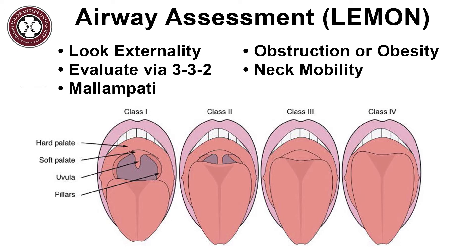The next two considerations are obstruction and obesity. Obstruction refers to anything in the pharyngeal space, such as a mass or trauma, that may interfere with access to the glottis. The importance of obesity must not be discounted because many obese patients have redundant pharyngeal tissue that can make intubation difficult and cause rapid desaturation once anesthetized.